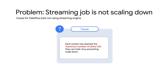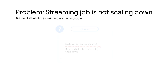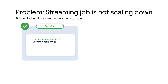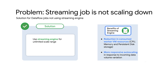Thus, if you observe that a streaming job is not scaling down, it is because each worker has reached the maximum number of disks they can hold, and Dataflow workers cannot scale down any further even if CPU utilization is low. To address this issue, use the streaming engine. The Dataflow streaming engine moves pipeline execution out of the worker VMs and into the Dataflow service backend, resulting in reduction in consumed CPU, memory, and persistent disk storage resources on the worker VMs.